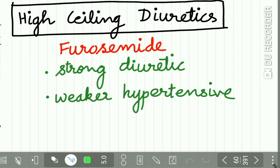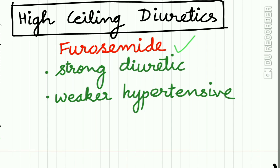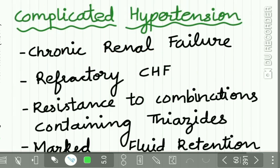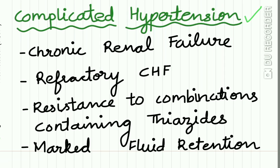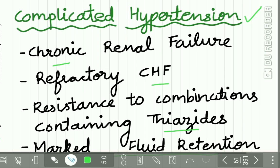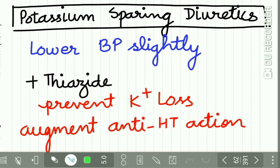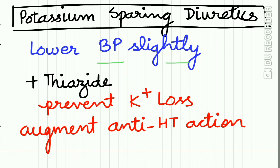The second subclass — high ceiling diuretics — includes furosemide. It is a strong diuretic but a weaker anti-hypertensive. It is used in complicated hypertension: chronic renal failure, refractory congestive heart failure, resistance to thiazide-containing combinations, and marked fluid retention. Potassium-sparing diuretics lower BP slightly, are given alongside thiazides, prevent potassium loss, and augment the anti-hypertensive action of thiazides.